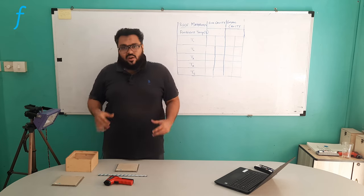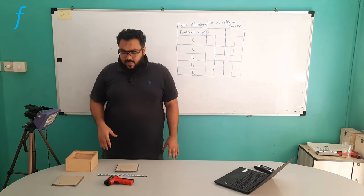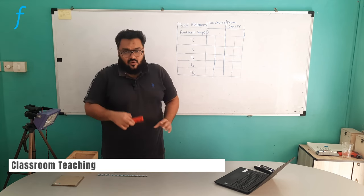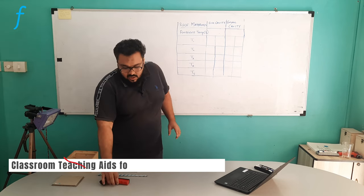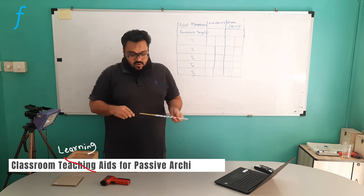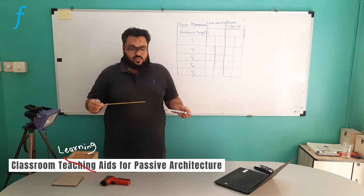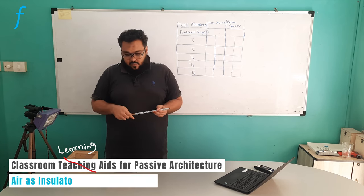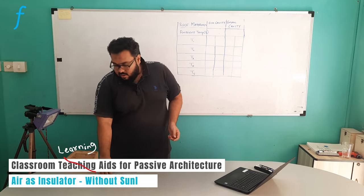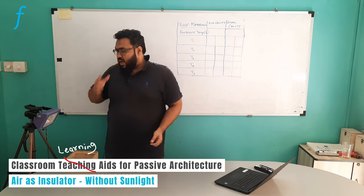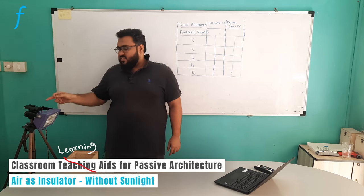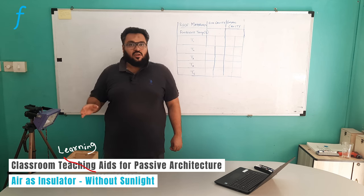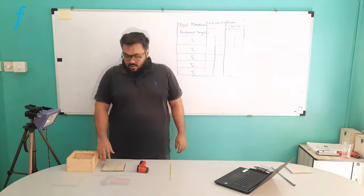To perform this experiment we will require a few pieces of equipment. This is the temperature gun, this is the lab thermometer which is going to be useful for performing this experiment, and we also have the halogen tube along with the stand, since we don't have sunlight exposure here inside the room.